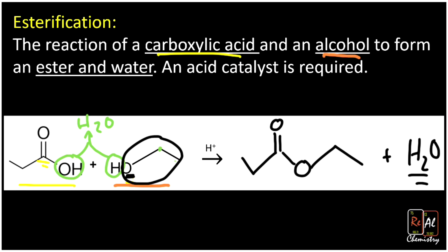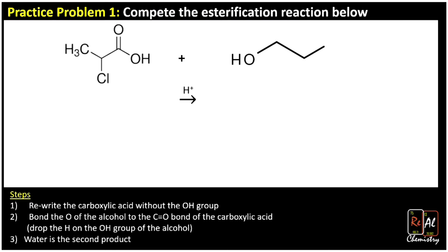Let's work two more practice problems. It says complete the esterification reaction below. Here are the steps: rewrite the carboxylic acid without the OH group; bond the O of the alcohol to the C=O bond of the carboxylic acid; drop the H and the OH of the alcohol, and water is going to be our second product. So we're getting rid of those and bonding everything else together. Let's follow these instructions step by step — first, rewrite the carboxylic acid group without the OH.